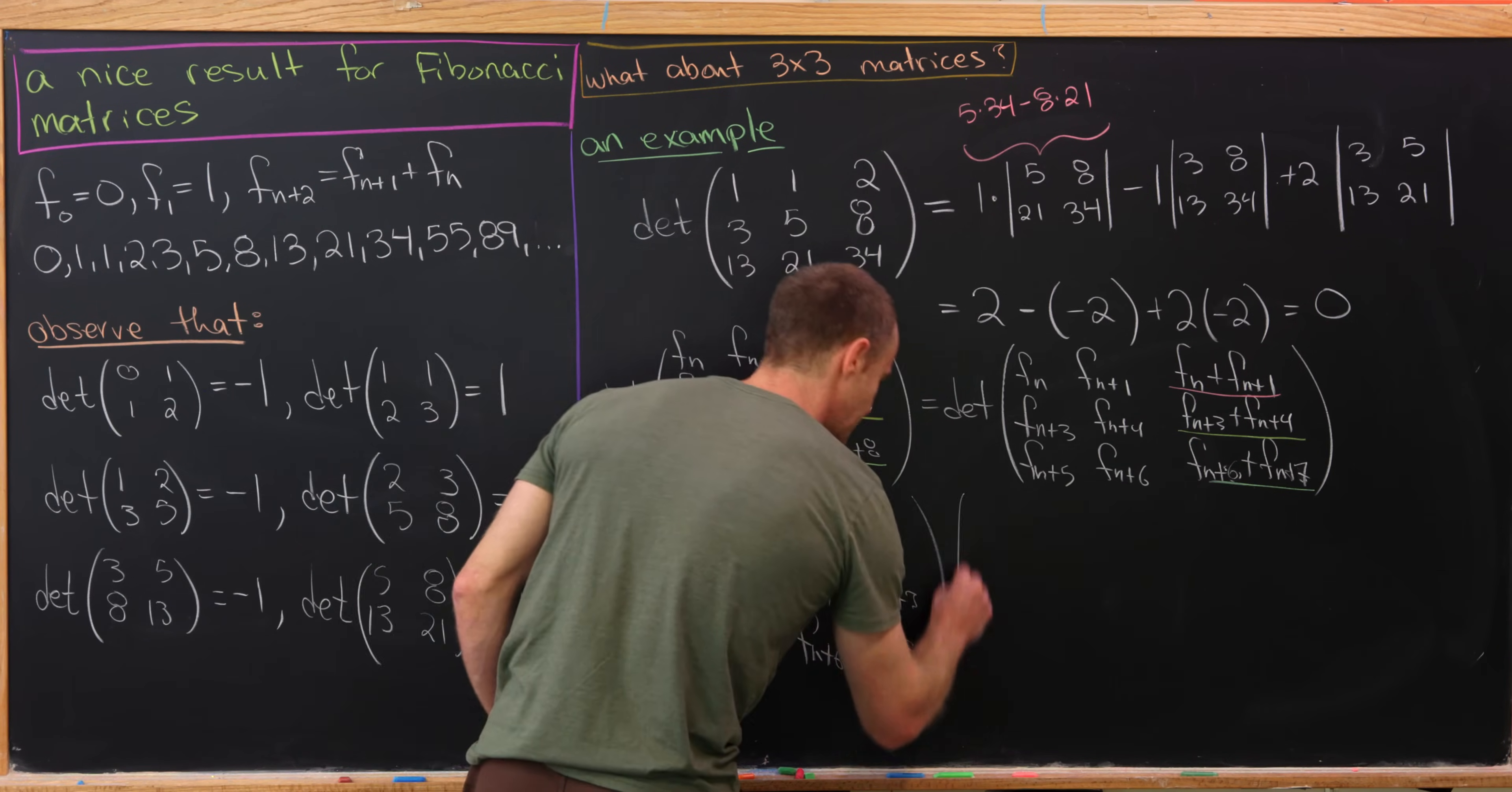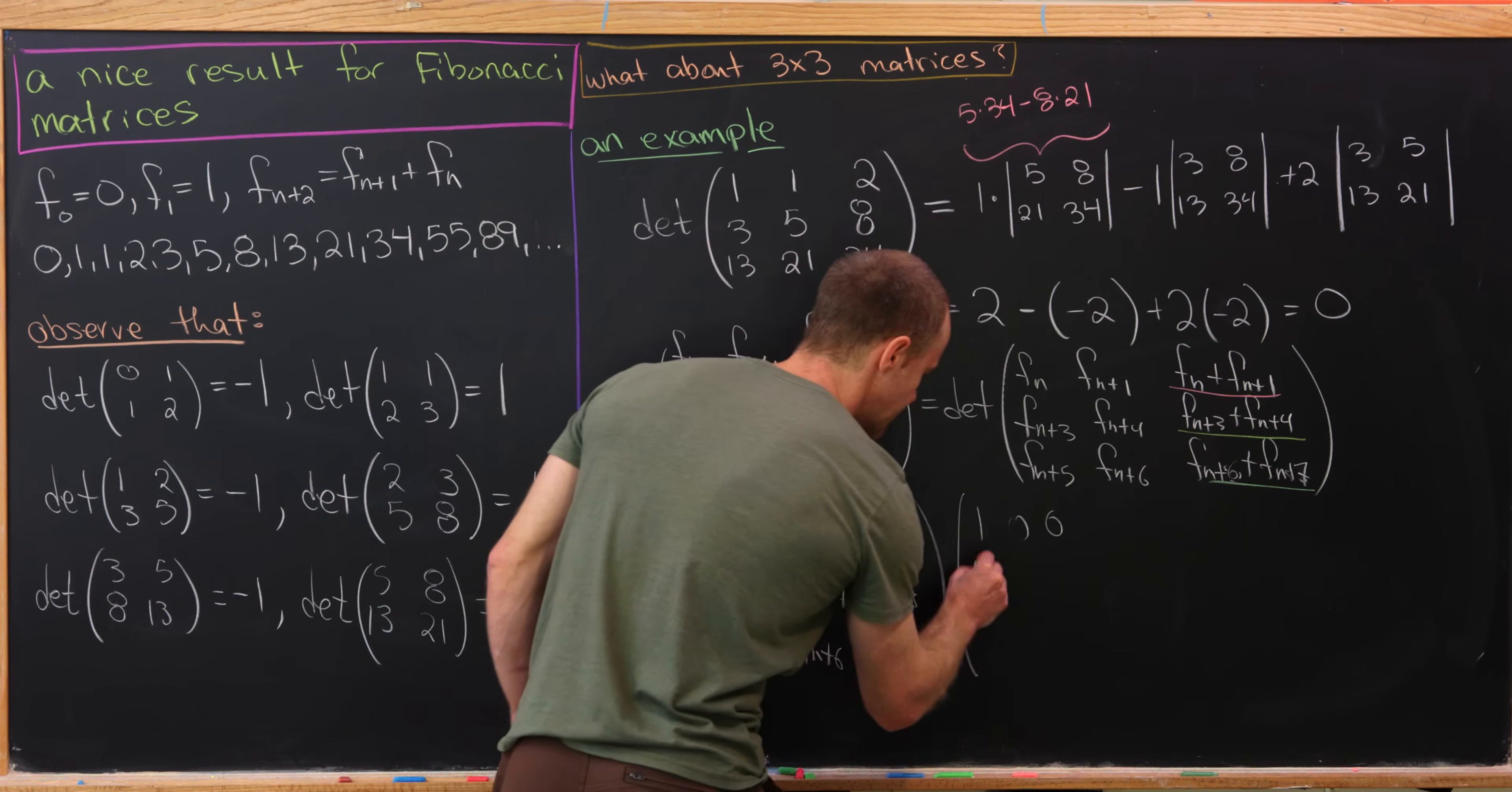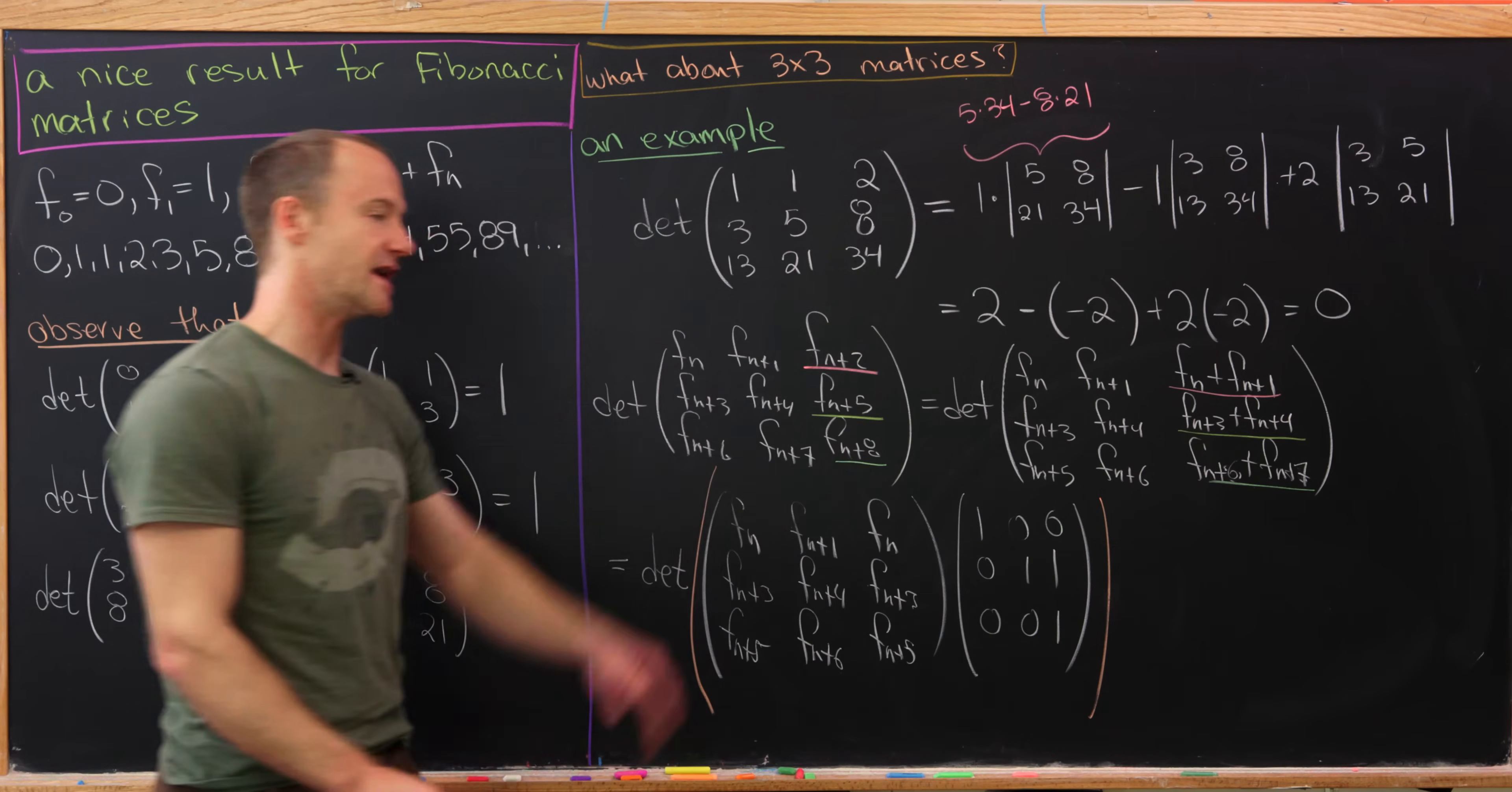Now let's maybe put a big parenthesis here because that's all inside of the determinant function. And we're going to notice that if we multiply this by the matrix 1, 0, 0, 0, 1, 0, 0, 1, 1, we get the matrix that's right above.